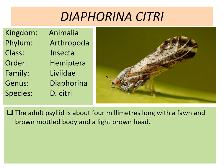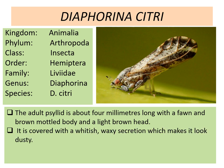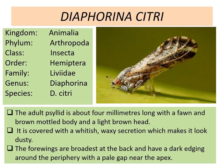The adult psyllid, commonly known as a psyllid, is about 4 mm long with a fawn and brown mottled body and a light brown head. It is covered with whitish waxy secretions which makes it look dusty. The four wings are broadest at the back and have dark edging around the periphery with a pale gap near the apex.